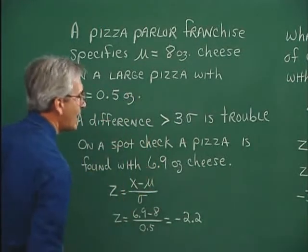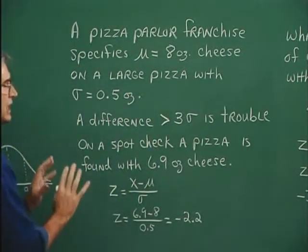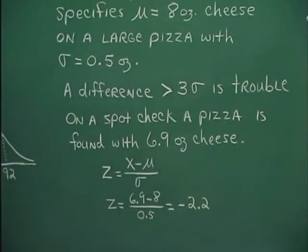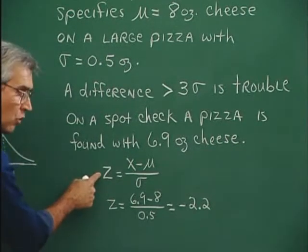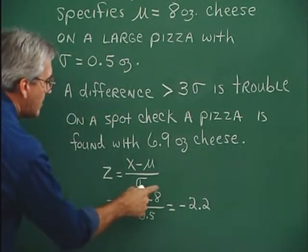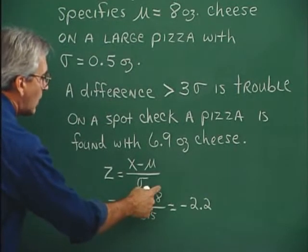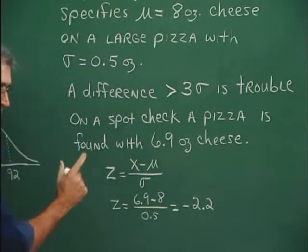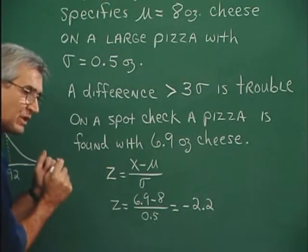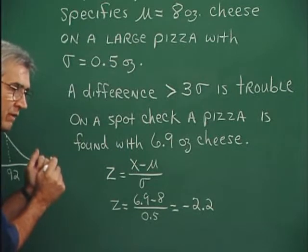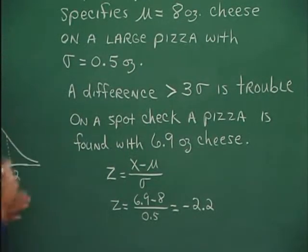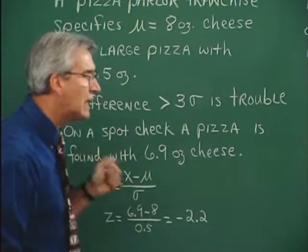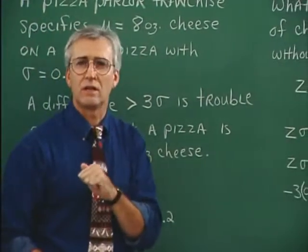Let's find out how many standard deviations from the mean we're talking about. Using the z-score formula: (6.9 - 8) / 0.5 = -2.2. We are still within three standard deviations from the mean, so there is no trouble. It looks like this owner is skimping a little bit on the cheese, but not so much that they're going to be in big trouble.